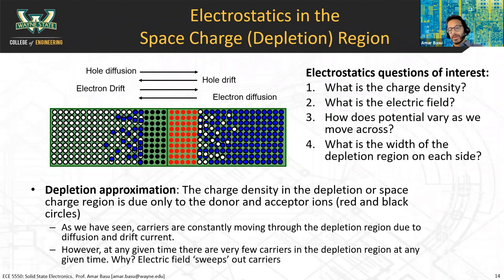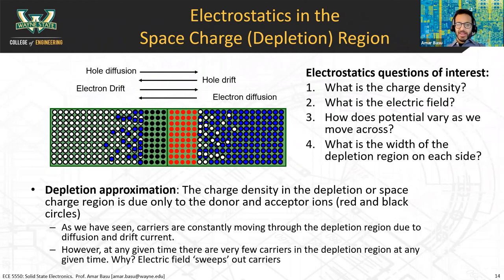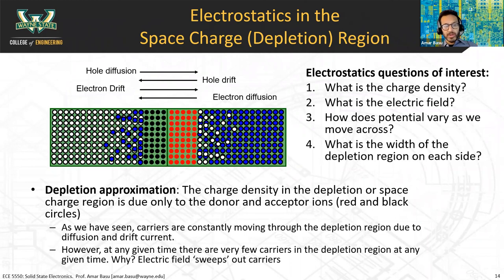One important thing we're going to start off with is an approximation called the depletion approximation. This states that the charge density in the depletion region is due only to donor and acceptor ions — basically, we're assuming that there are no electrons and holes in the space charge region. Even if there are any, their concentration is negligible.